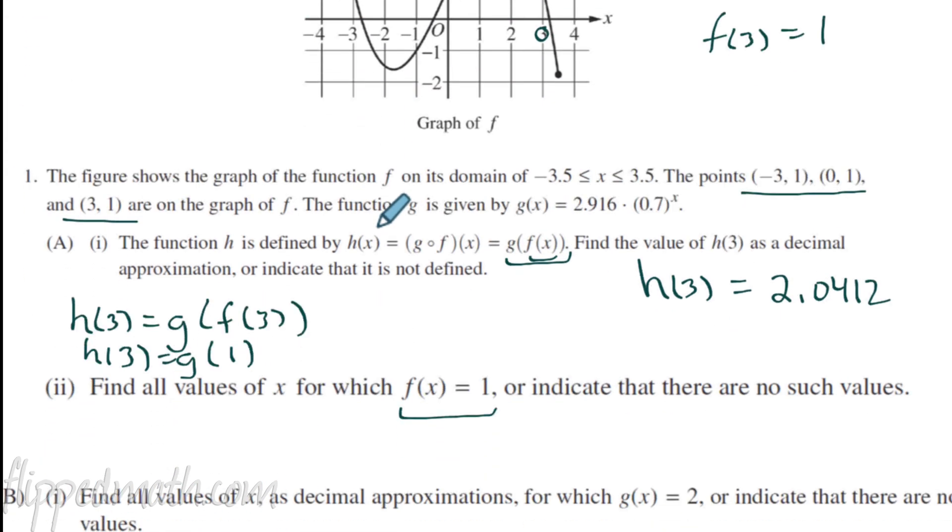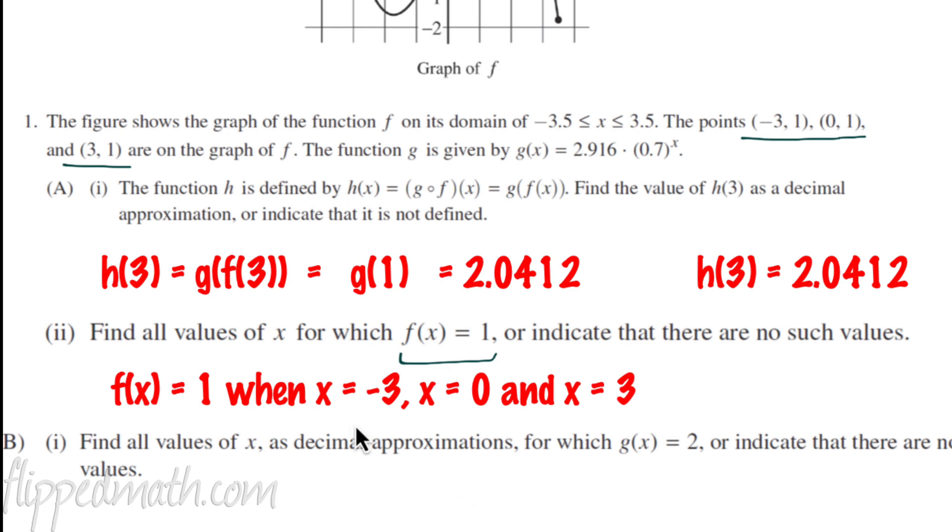Here's a point right here. When x equals 0 and when x equals negative 3. So I'm going to write it out like this. I like to make sure when I'm answering a question that I reread the question and I start my answer answering that question directly. So it says find all the values of x for which f of x equals 1. So I start my reply with f of x equals 1 when x equals negative 3, x equals 0, and 3.